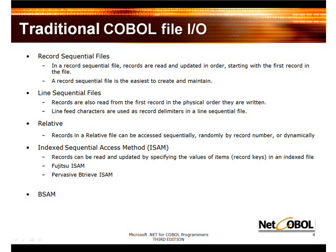Sequential files have records that are usually read and updated in order, starting with the first record in the file. The same is true for line sequential files, but the principal difference between the two is that there's a line feed or carriage control characters that are used as record delimiters in a line sequential file. If you were to look at a line sequential file with a hex editor, you'd notice that there's a 0D, 0A at the end of each record. When you specify line sequential in your organization statement, you should know that the behavior of the runtime system is that it's going to be reading the record right up until that record delimiter.